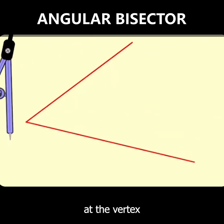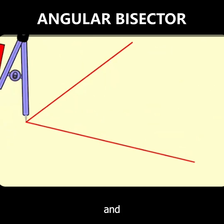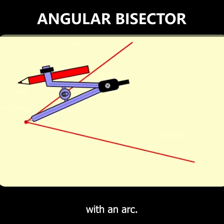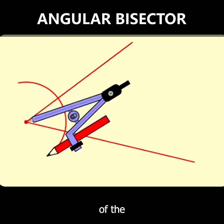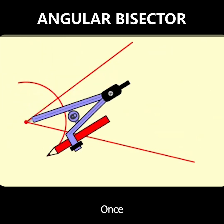All you do is take your compass at the vertex and then start with an arc. Make sure your arc has intersected both of the rays of the angle.